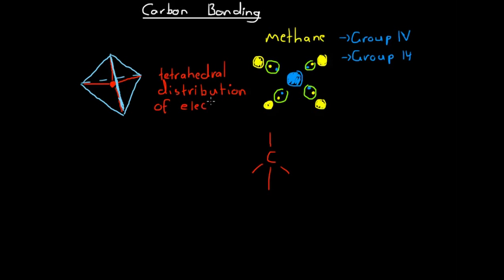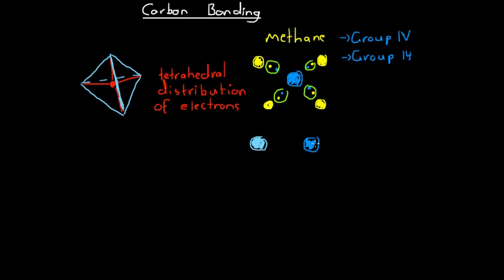That's just what happens because our electrons want to get as far away from one another as possible. Now, carbon atoms don't always bond with single other atoms — carbon wants to form 4 covalent bonds, and it doesn't care how many atoms it requires to do this. So what can happen is that carbon atoms can form double covalent bonds with other atoms. Using ethene as our example, we draw one carbon atom and another carbon atom, and as long as the carbon forms 4 covalent bonds it's satisfied. It can form 2 bonds with the same other atom.